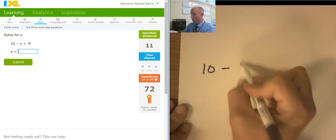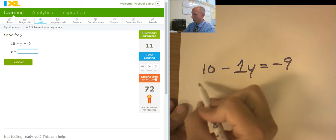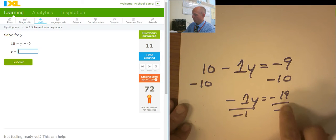10 minus negative 1y. I'm going to put that negative there so I don't get confused. Equals negative 9. Subtracting 10 from both sides. Negative 1y equals negative 19. Dividing both sides by negative 1. Oh, that was a really big negative. So y equals a positive 19.